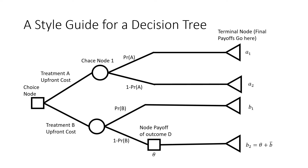Before we go into actually modeling, we want to talk about some style guides for drawing decision trees. There are going to be three different types of nodes: a choice node, which is denoted by a square; a chance node, which is denoted by a circle; and a terminal node, which is denoted by a triangle.